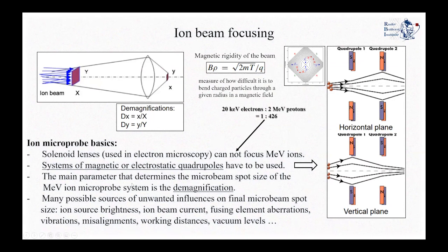While focusing, there can be many possible sources that influence the final microbeam spot size. Some of them include the ion beam current — one should start with a decent ion beam current to collimate and then focus it. The beam spot is also affected by aberrations of the focusing elements. Another important factor is vibrations induced by pumps or other components of the setup. Misalignments between the quadrupoles, the beam, and the slits are also important, as well as working distances and the vacuum level in the chamber and beam line.